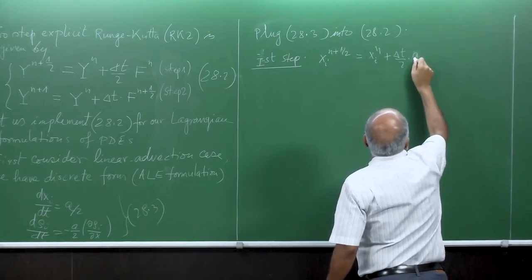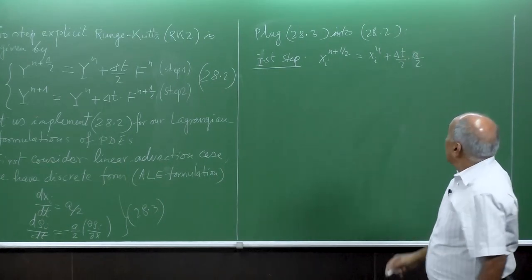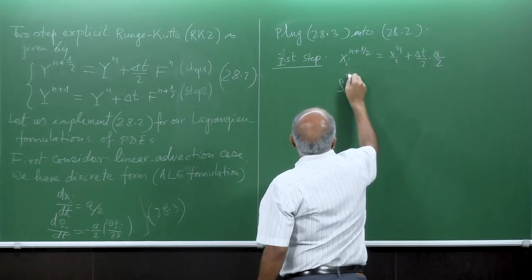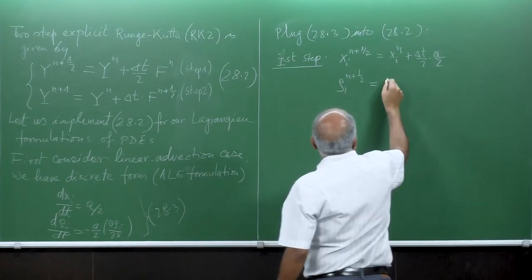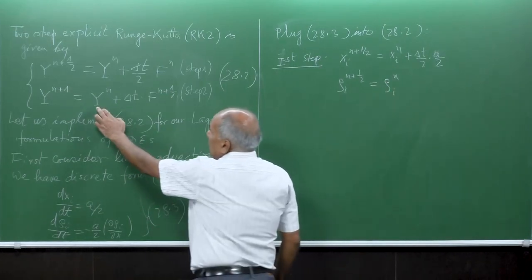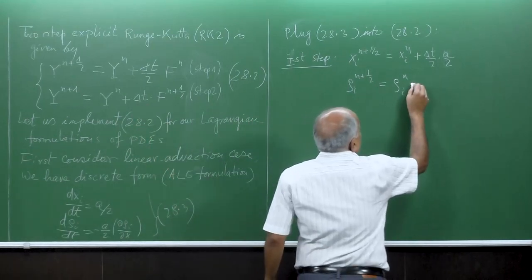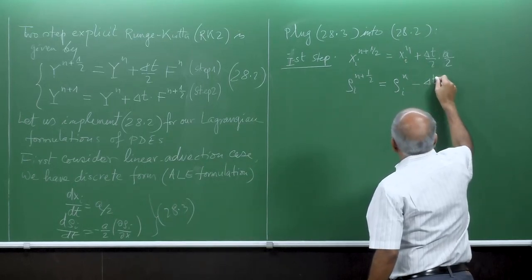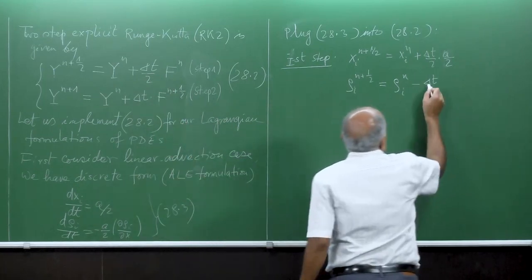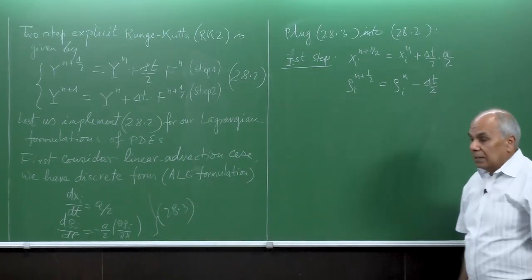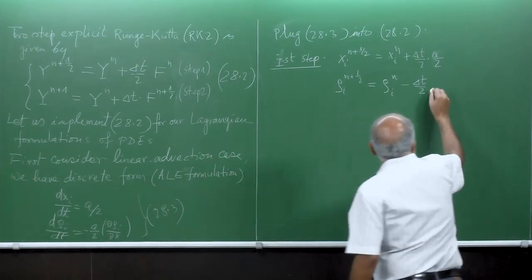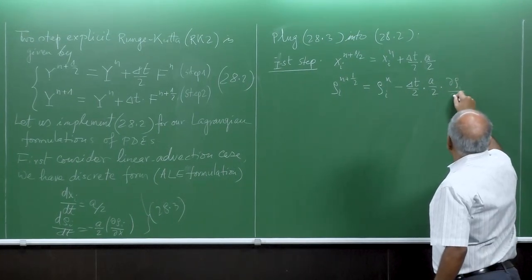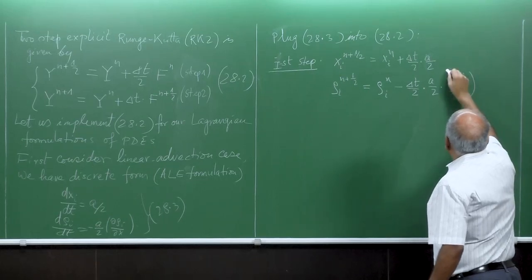And then our second equation: rho_i^{n+1/2} = rho_i^n. Our right-hand side is minus delta_t/2 times constant a/2 times (del rho_i / del x) at time level n. This is the first step.